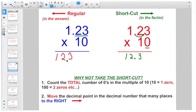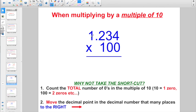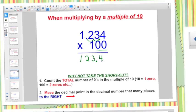So let's go and try a few of these. Here I have 1.234 and I want to multiply it by 100. It's just ones and zeros. So let's count the total number of zeros. I have two. So let's take the shortcut. Because when we multiply by a whole number, the product gets larger. And I'm going to move my decimal point to the right now. And I end up with 123.4.